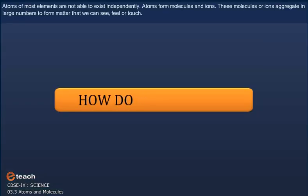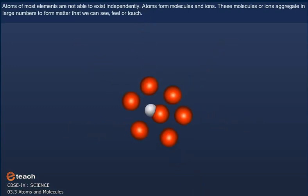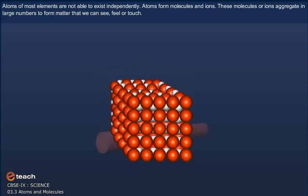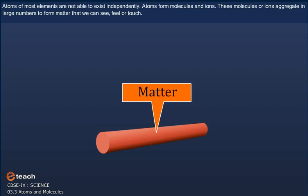Atoms and molecules: How do atoms exist? Atoms of most elements are not able to exist independently. Atoms form molecules and ions. These molecules or ions aggregate in large numbers to form the matter that we can see, feel or touch.